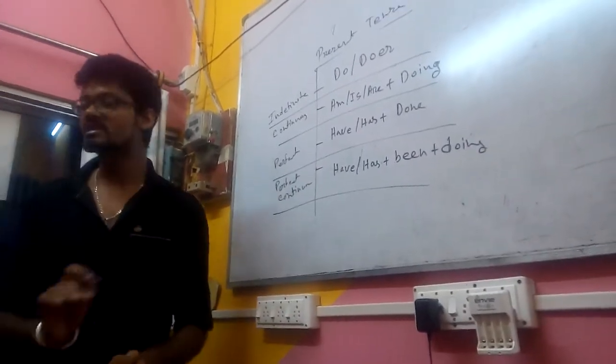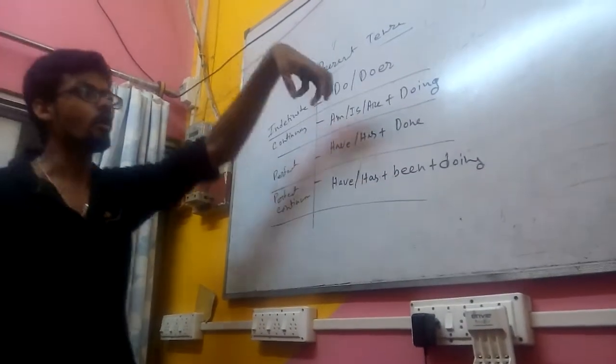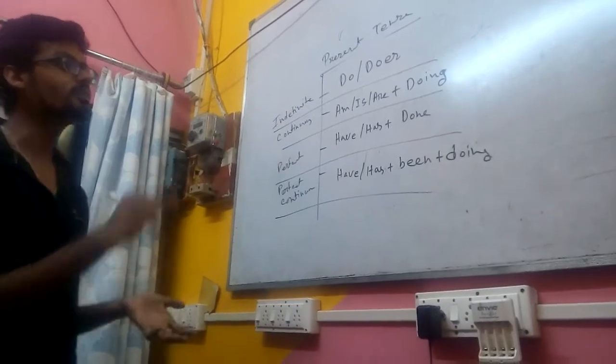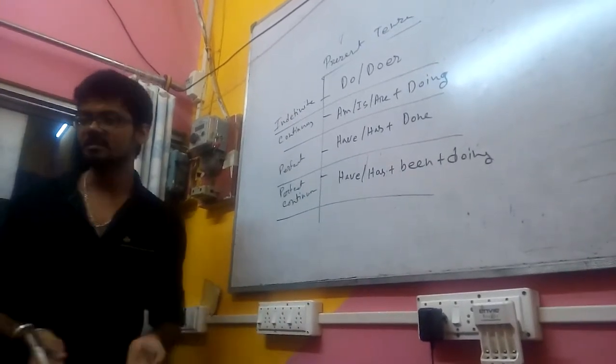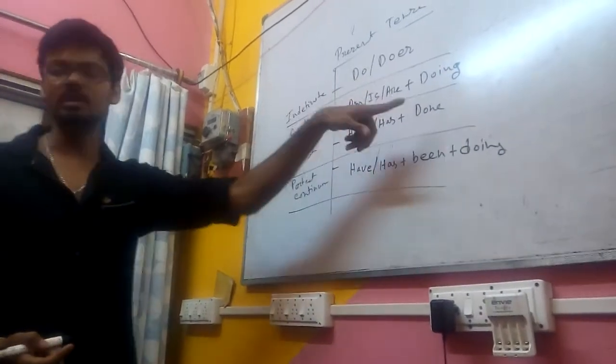This kind of sentence is called a statement sentence. If we move the auxiliary verb in front of the subject, it converts into an interrogative sentence. For example: 'Do I do?' 'Am I doing?'